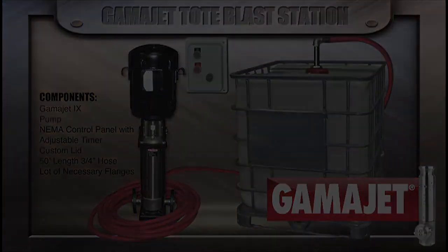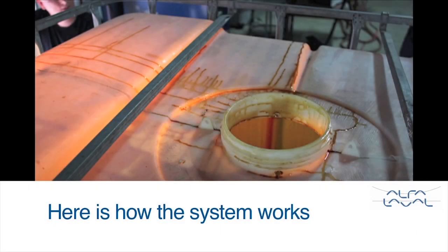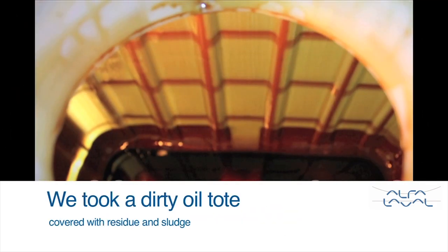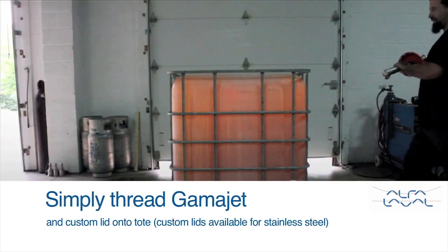Here's a quick demonstration of how the system works. We use the GammaJet blast station to clean out a tote filled with oil residue and sludge. We started by inserting the GammaJet into the tote and threading the lid onto the tote.